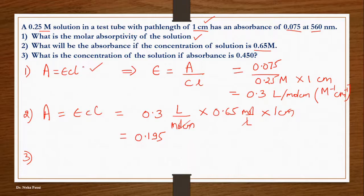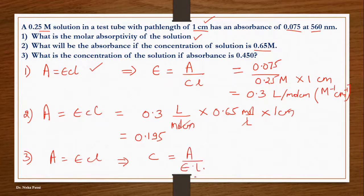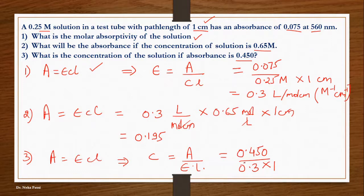Now the third part of the question asks: what is the concentration of the solution if the absorbance is 0.450? Again we use the same equation, but now rearranged for C: C = A / (ε·L). The absorbance is 0.450, ε remains 0.3 M⁻¹ cm⁻¹, and the path length is 1 cm. The units cancel — M⁻¹ cm⁻¹ and cm — and you get a final answer of 1.5 molar.